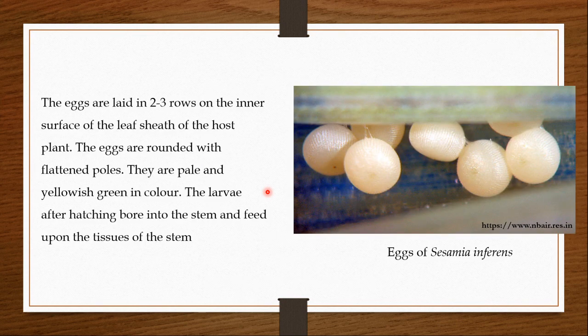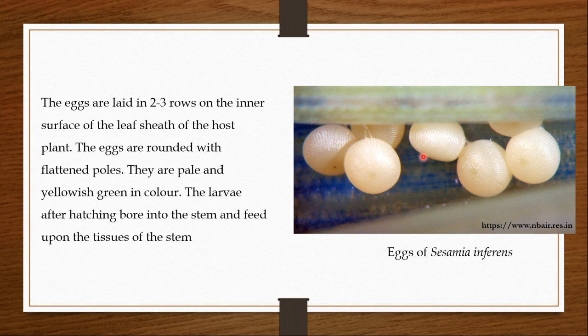The eggs are laid in 2 to 3 rows on the inner surface of the leaf sheath of the host plant, whether wheat or rice. The eggs are rounded with flattened poles — they kind of look like oranges. They are pale and yellowish-green in colour, though they can also appear whitish. The eggs are also ridged if you look more attentively.